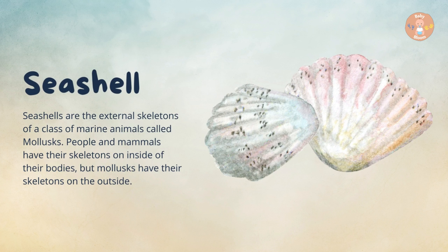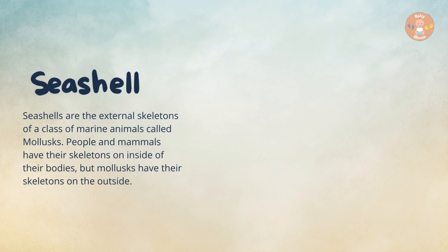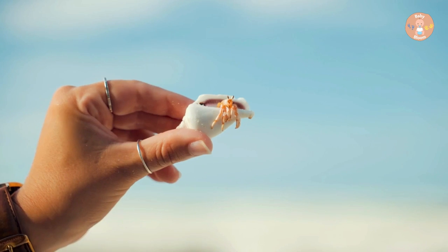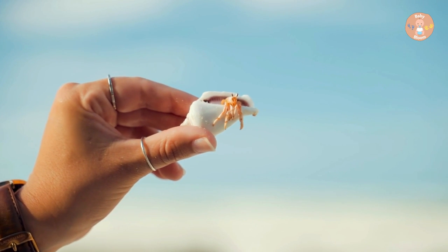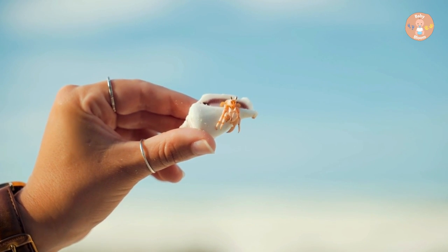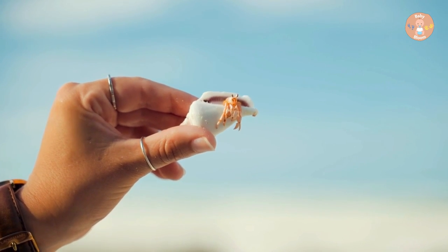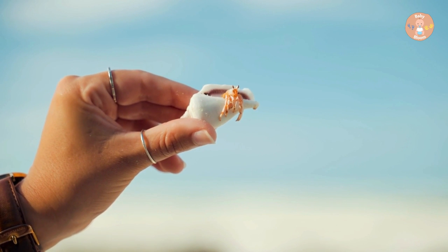Seashell. Seashells are the external skeletons of a class of marine animals called mollusks. People and mammals have their skeletons on the inside of their bodies, but mollusks have their skeletons on the outside.